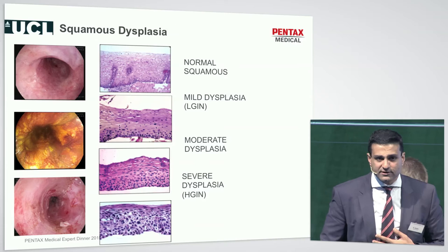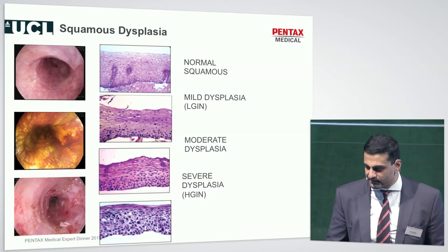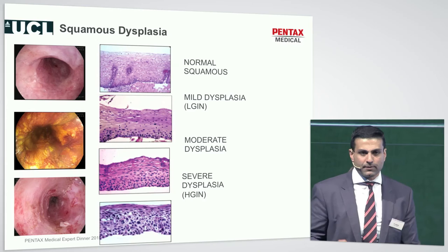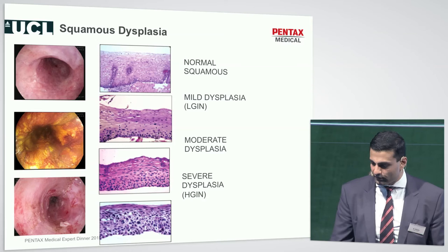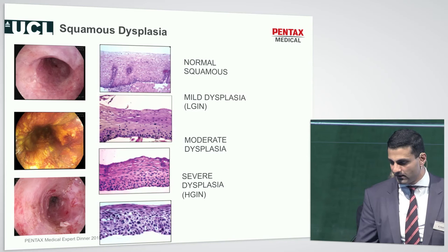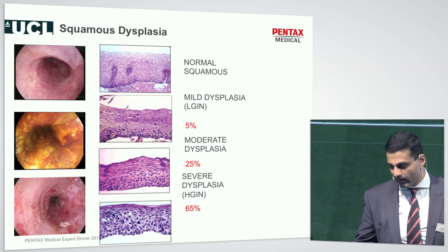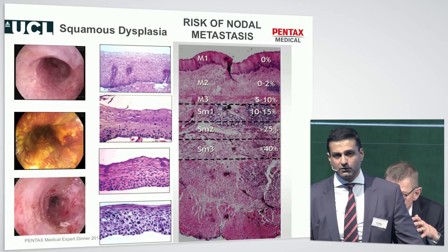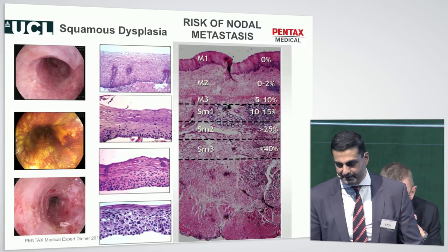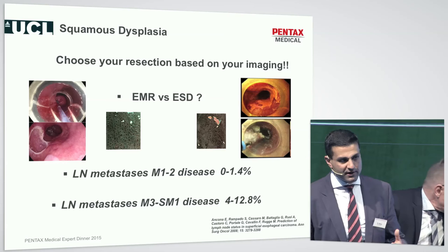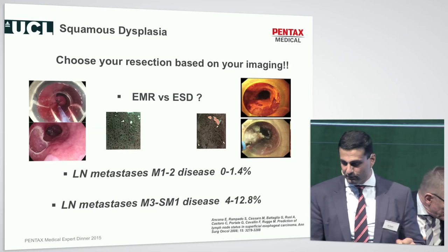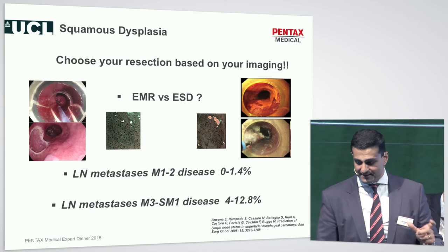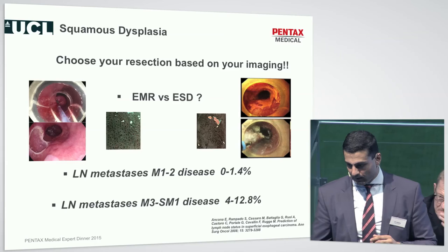Squamous dysplasia is not something we see much in the Western world, and it is a much more aggressive disease. It doesn't have a macroscopic precursor like Barrett's to drive your eyes and sampling — these are very subtle changes in the microvasculature. Even with low-grade or moderate dysplasia, the risk of progression to invasive squamous cancer is a lot higher, and the risk of nodal metastasis even with deep mucosal squamous neoplasia is much higher than Barrett's cancer. We need to be very accurate with staging before offering therapy, choosing resection — mucosal or submucosal dissection — based on imaging.